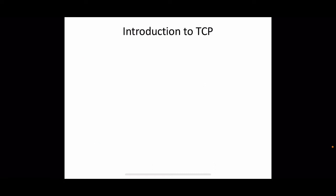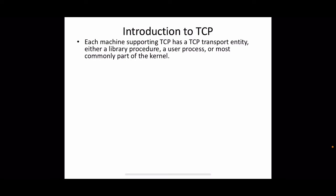Each machine supporting TCP has a transport entity, which resides in the transport layer. It may be either a library procedure, a separate user process, or in most cases it will be part of the OS kernel itself. So a transport entity may be a user process, part of the OS kernel, or a separate library procedure.